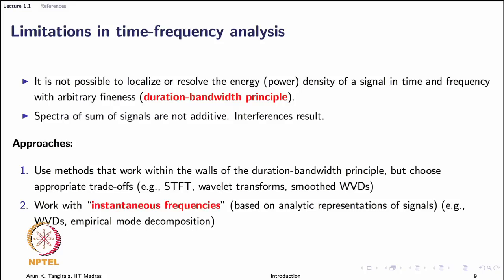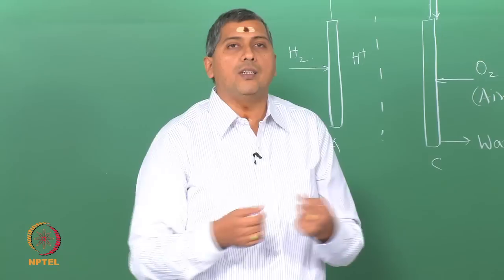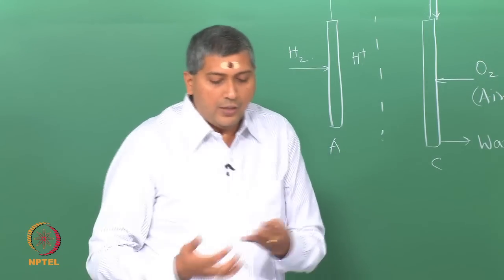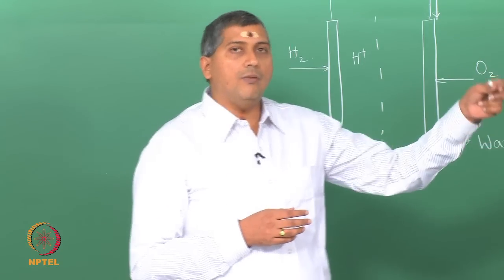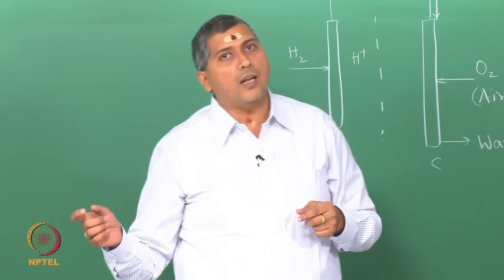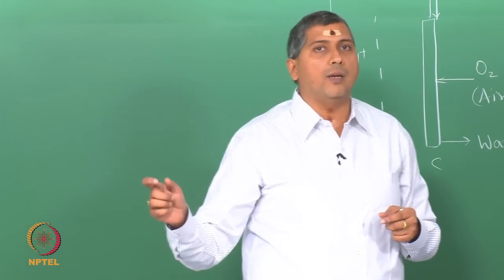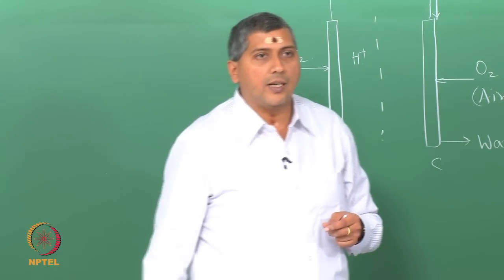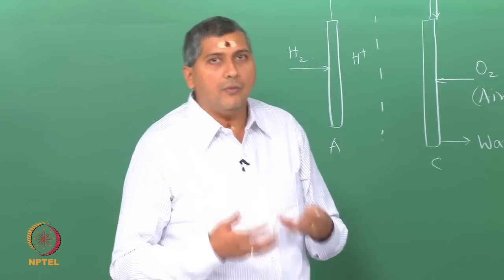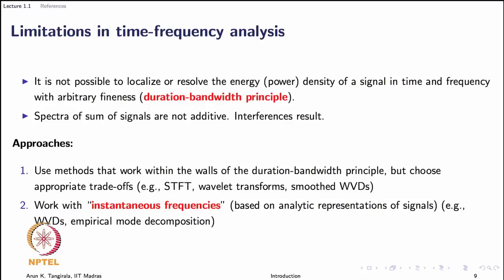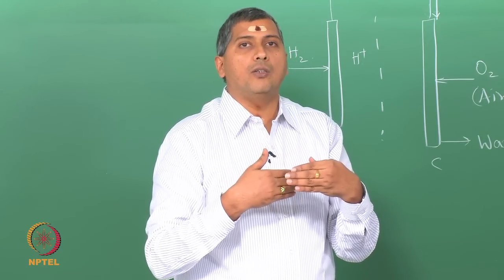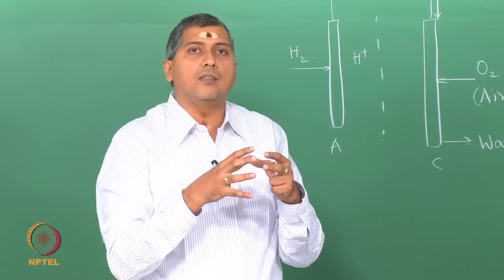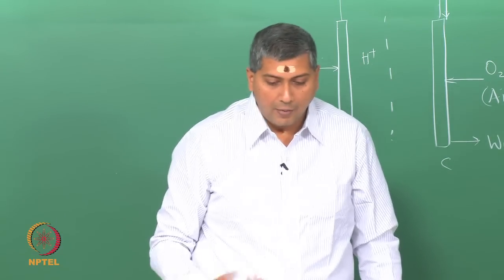If I try to capture local features in time, I will have to sacrifice information on local features in frequency — that is the trade-off within which all these tools work. Fourier analysis takes the extreme trade-off: the time series gives you very nice information in time by virtue of sampling, whereas Fourier analysis gives very fine localization in frequency, but loses local information in time. Another limitation is that when you add signals, the spectrum of the sum is not the sum of individual spectra — there are interference terms that generate spurious features in your spectrum.